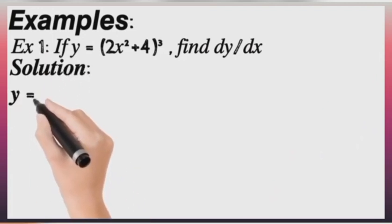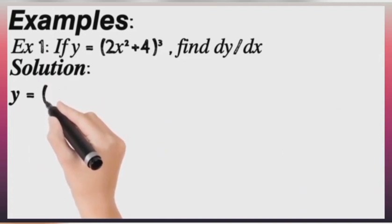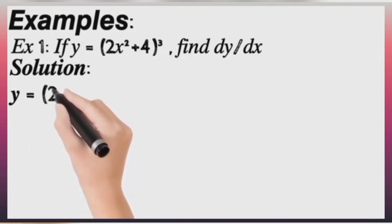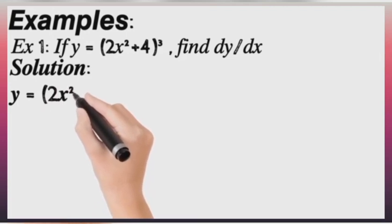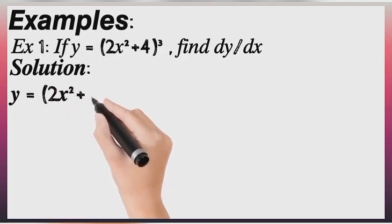Now what we need to do is we need to replace everything in the bracket by what? By u. That is what we need to do. So let's write out the question first. We have y equals to (2x squared plus 4) raised to power 3.